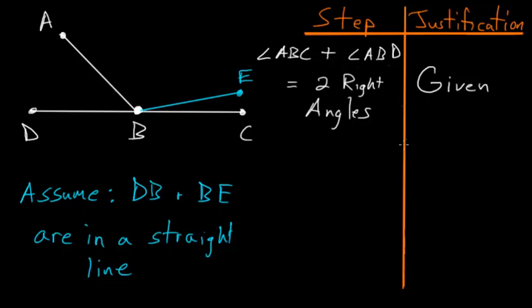With this assumption, we can use book 1 proposition number 13, which says that if we have a straight line and a line coming off of it, so in this case DB is our straight line and BA is the line coming off of it, then the angles here will add up to two right angles.